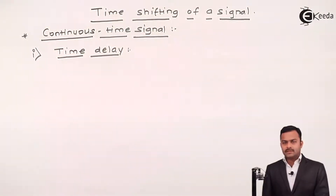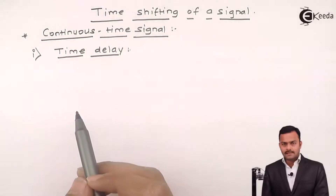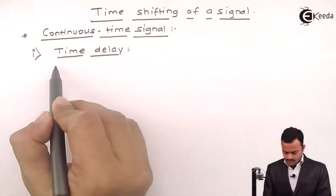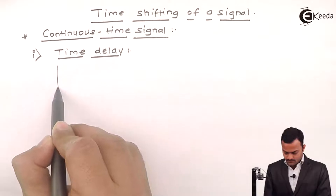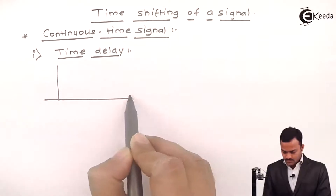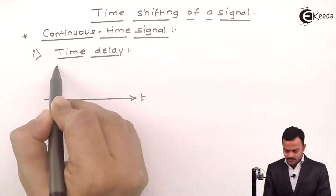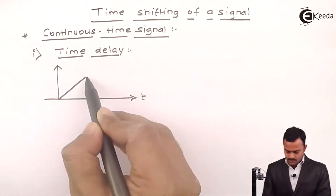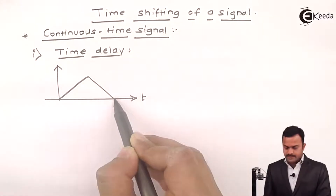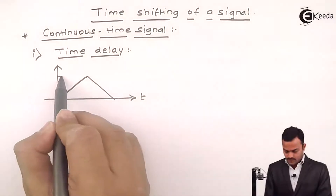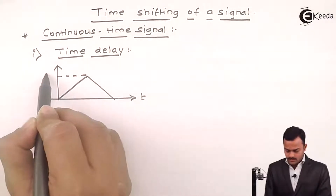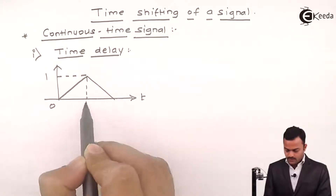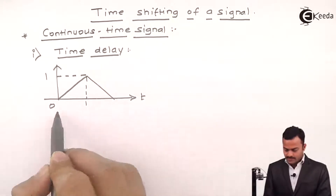Let me explain this with the help of one simple example. We have x of t, which has the value 1 obtained at t equal to 1, and it's a ramp signal.